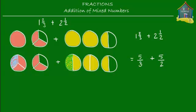One pepperoni pizza slice should be the same size as one cheese pizza slice before you can add them up. In terms of fractions, different slice sizes means the denominators three and two are different. So you must first give these two fractions a common denominator. The way to find the common denominator is using LCM — least common multiple. The LCM of three and two is six.